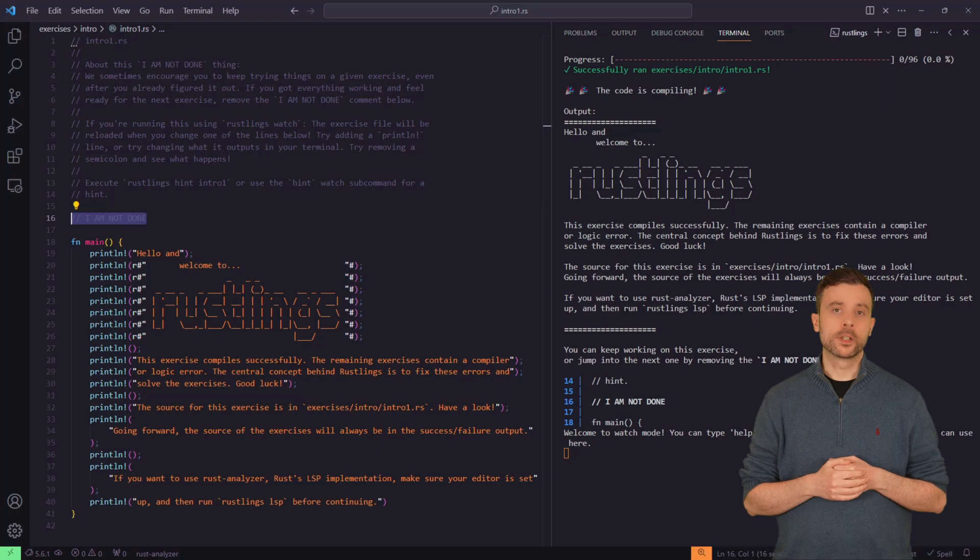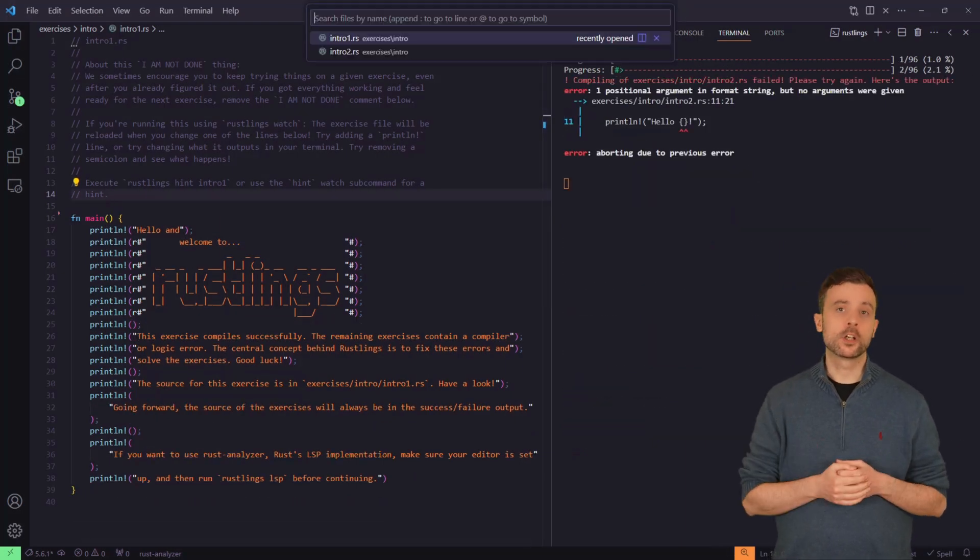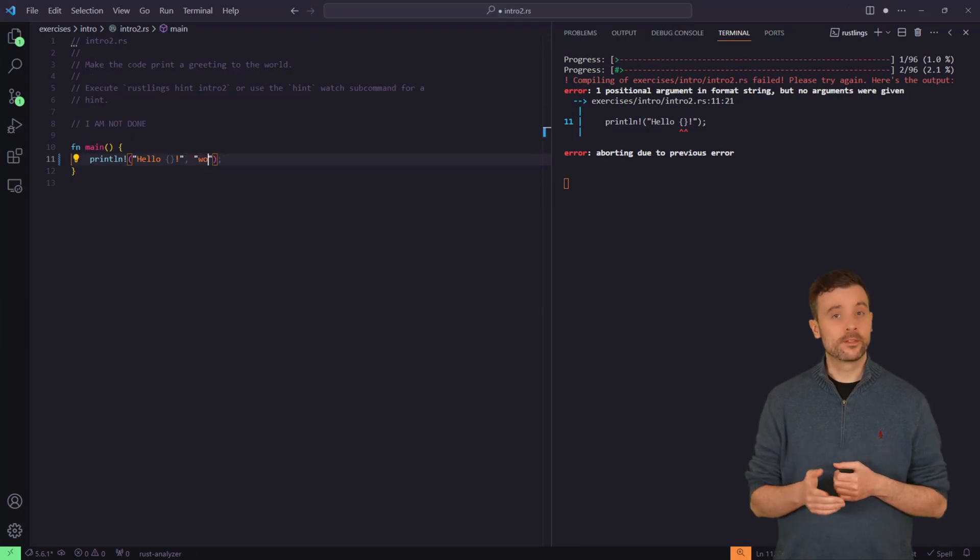Rustlings is a learn by doing guide to Rust. It works by giving you specific exercises to help you understand the language a bit at a time. The gamification of the course makes it really fun, and I still use Rustlings to help keep myself sharp.